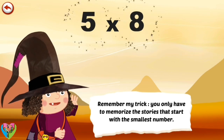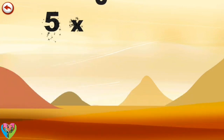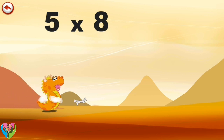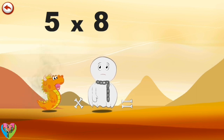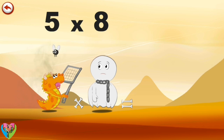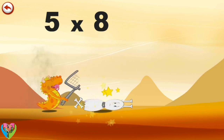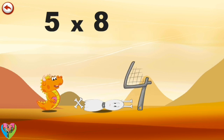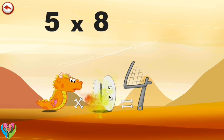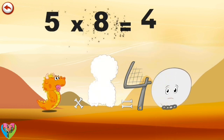Remember my trick. You only have to memorise the stories that start with the smallest number. What's the story of 5 times 8? When Baby Flaming 5 is suddenly frightened by Spooky 8 the ghost, he jumps and gives a little fart. The smell makes the ghost feel unwell and attracts a fly. Flaming 5 brings out his fly swatter, but trying to hit the fly, he hits Spooky 8 instead and flattens him like a pancake. Baby Flaming 5 throws away his broken fly swatter in the shape of a 4, and breathes some hot air to bring the poor ghost round. But he breathes so hard, Spooky 8 gets bigger and bigger, like a ball in the shape of a zero. 5 times 8 is 40.